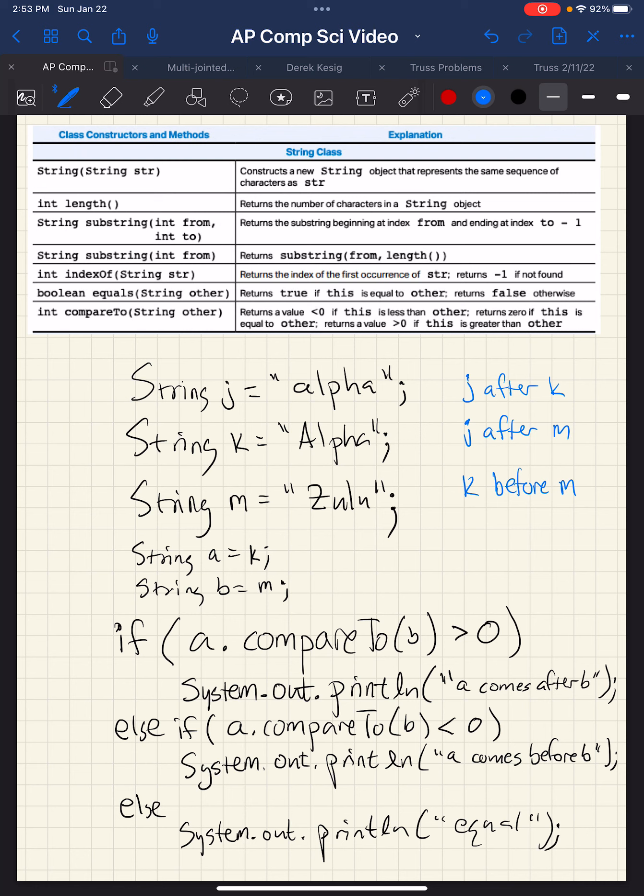So compareTo isn't alphabetical order, it's alphanumeric order. There is actually a compareToIgnoreCase method in Strings which allows you to compare and if they're letters it doesn't care whether they're uppercase or lowercase, they're treated the same. But the basic compareTo method treats them differently, and all of the capital letters come before all the lowercase letters.